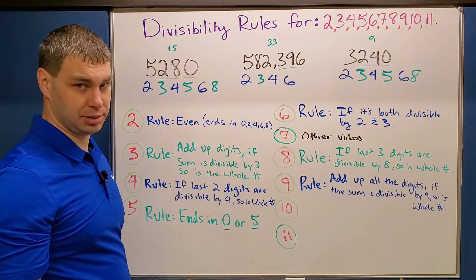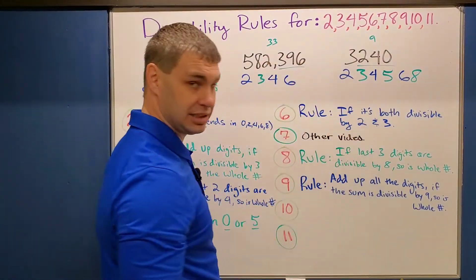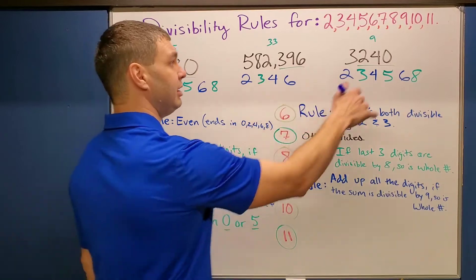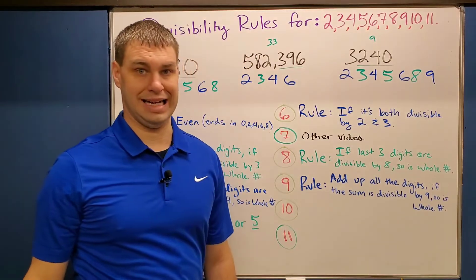So, 15, not divisible by nine, so this one won't work for nine. 33, not divisible by nine, so I can't use it there, but nine divided by nine is one, so this one is divisible by nine.